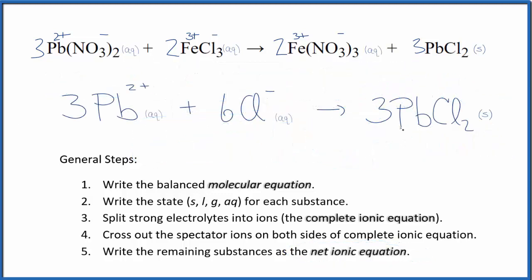So this is the balanced net ionic equation for the lead 2 nitrate and iron 3 chloride. If you look at the atoms, they're balanced, and the charge is balanced as well. 3 times 2 plus, 6 plus, 6 times 1 minus is 6 minus. That adds up to 0. Over here, this is a neutral net charge of 0.